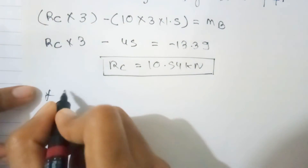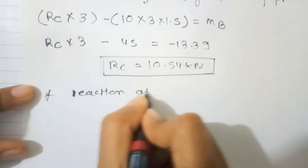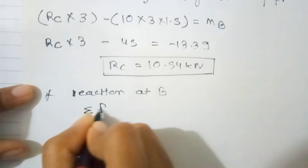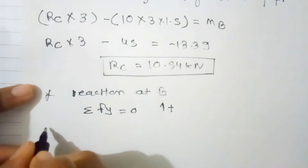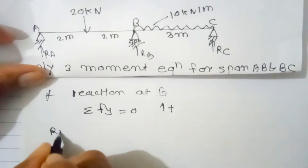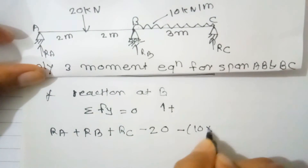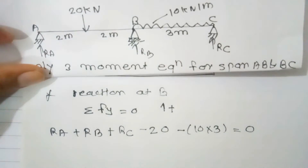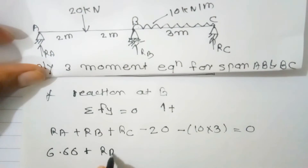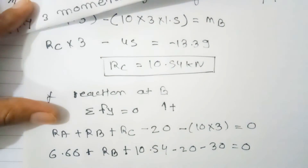To find RB, apply vertical equilibrium: ΣFy = 0, considering upward forces as positive. RA + RB + RC − 20 − 10 × 3 = 0. Substituting RA = 6.66 kN and RC = 10.54 kN: 6.66 + RB + 10.54 − 20 − 30 = 0. Therefore RB = 32.80 kN.